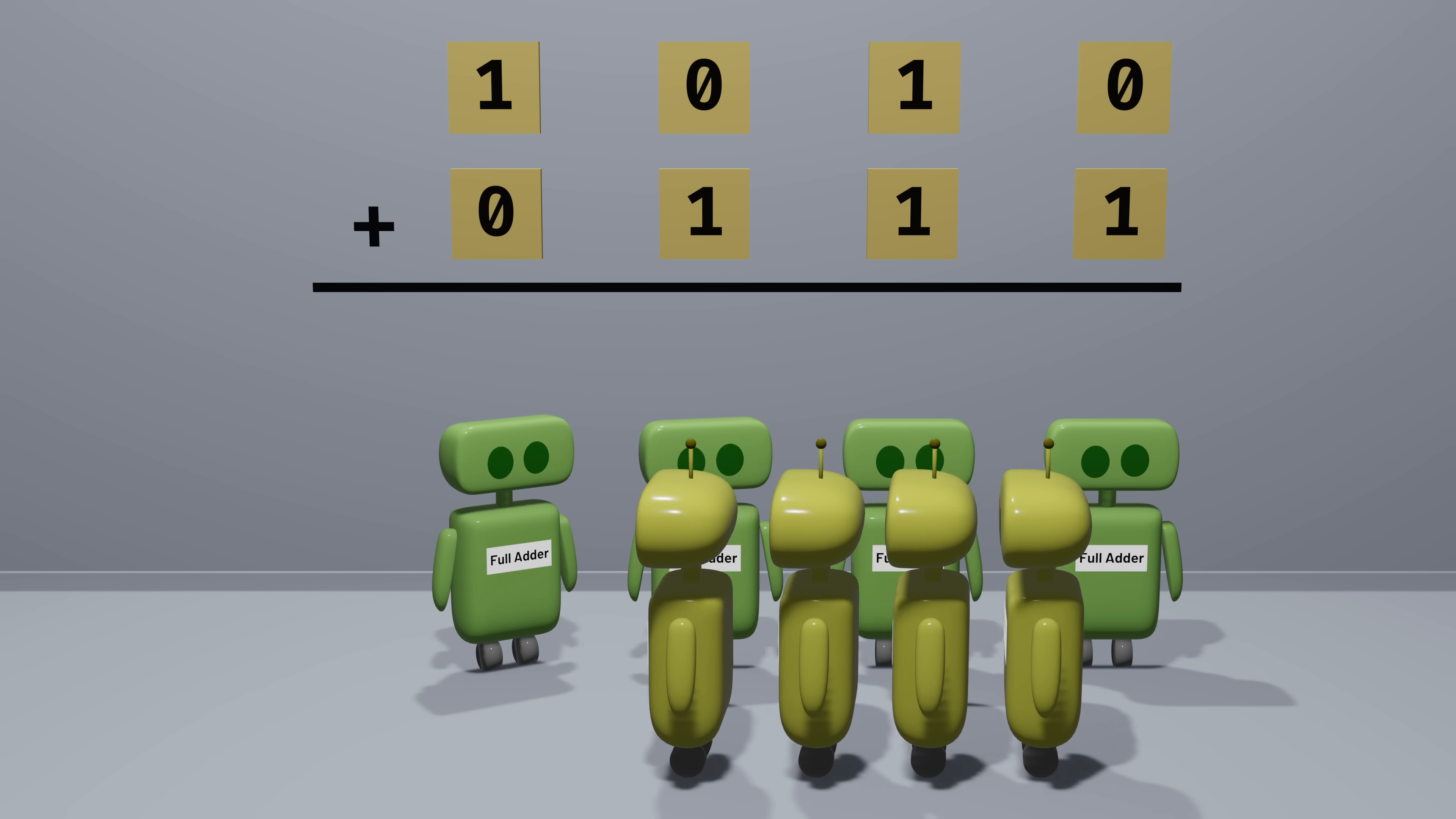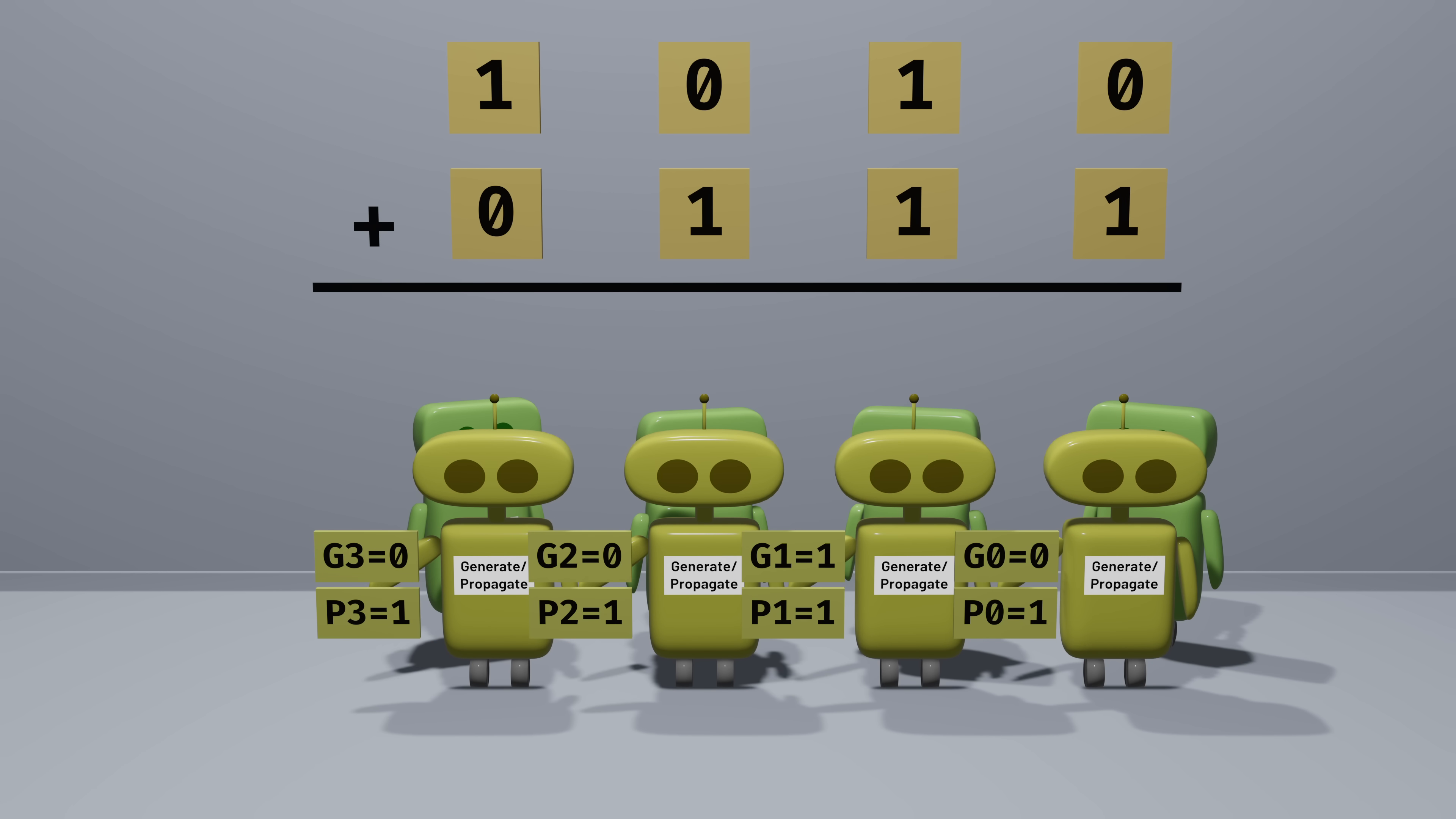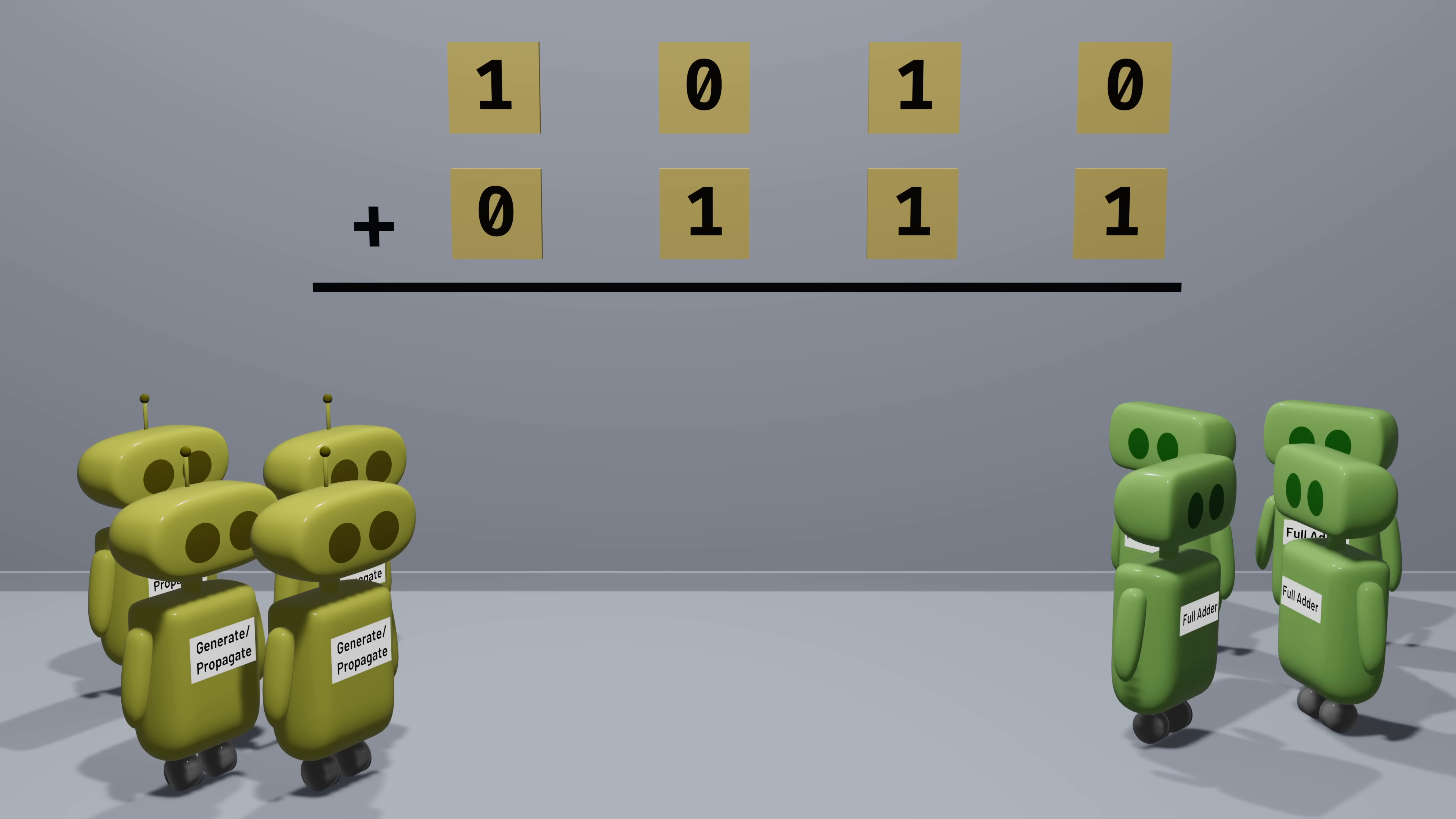First, for each pair of bits, we can calculate whether that addition generates or propagates a carry immediately, without waiting for the results of any other calculations. That means that right when the addition starts, we can calculate these generate and propagate values for all pairs of bits at the same time. Second, we can then use these generate and propagate values to compute all of the carries. For any given addition of a pair of digits, we can calculate the carry output this way. The addition will produce a carry of 1 if the addition generates a carry, or if there's a carry input and the addition propagates a carry.